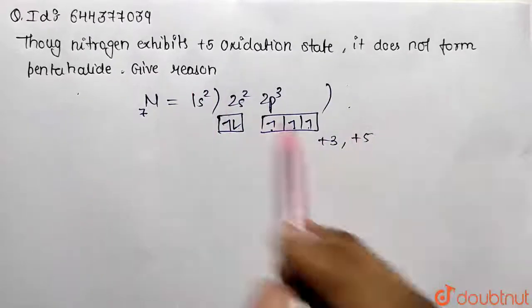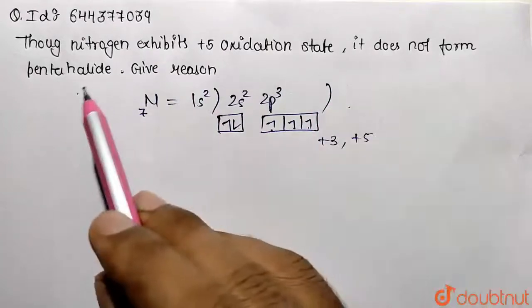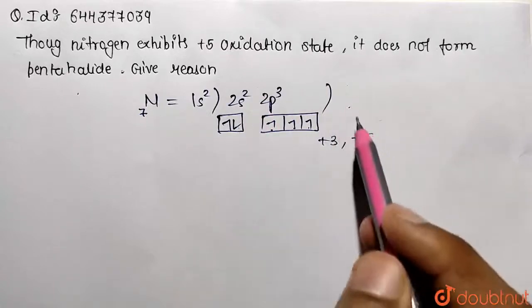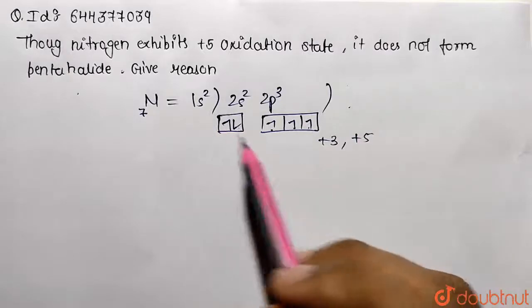it can show +5 oxidation state at maximum. But what we see in the formation of pentahalide is that this requires the availability of d-orbitals so they can form bonds with the halogens. There is